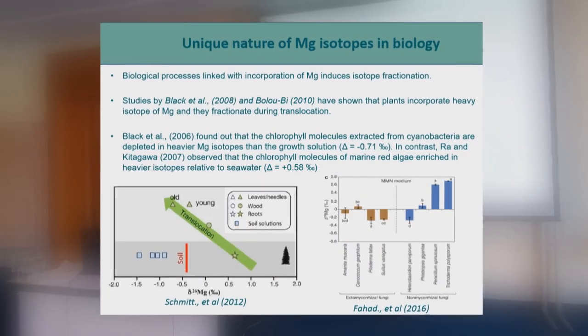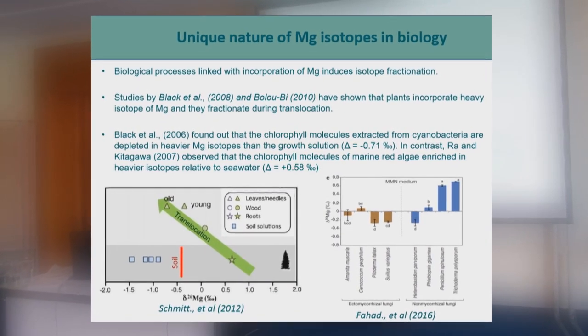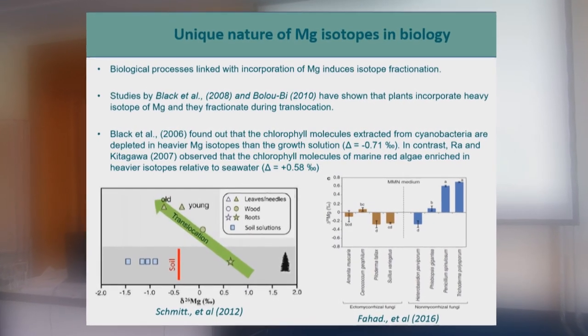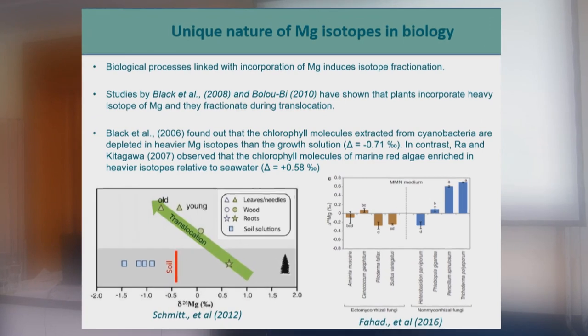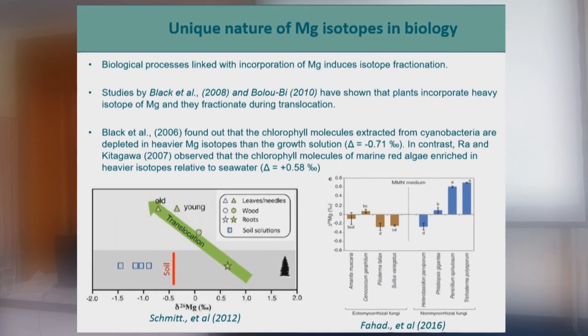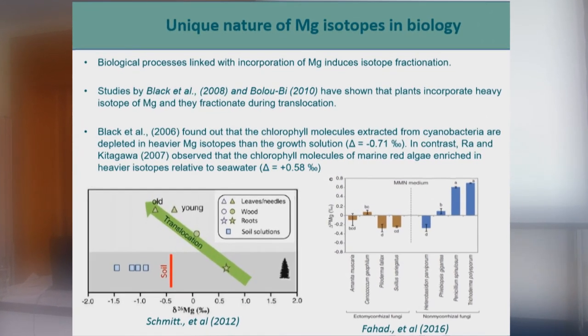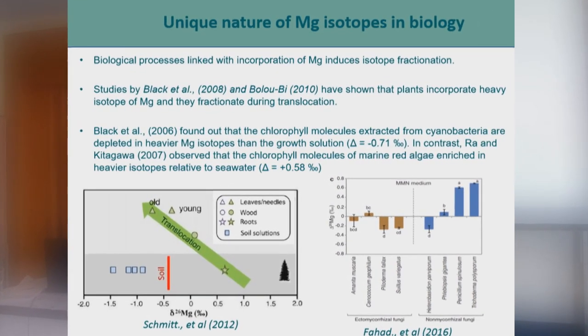Jeder biologische Prozess, an dem Magnesium teilnimmt, fraktioniert auch die Isotope des Magnesiums. Die Isotopenzusammensetzung aller Pflanzen unterscheidet sich immer von der Nährlösung, von der sie wachsen.